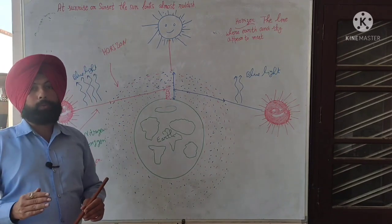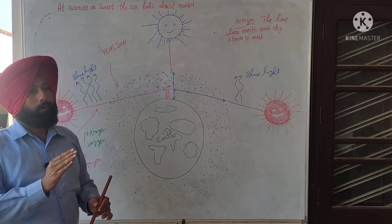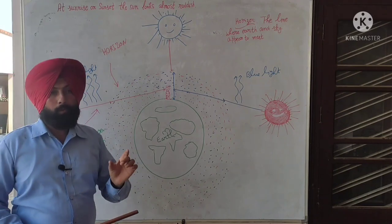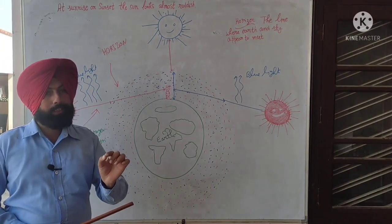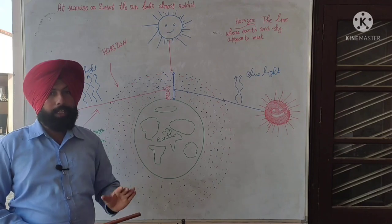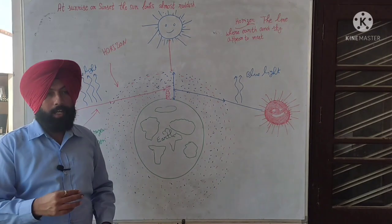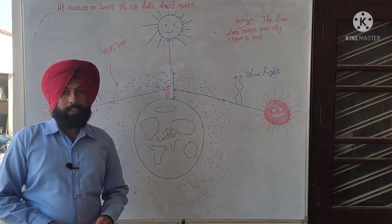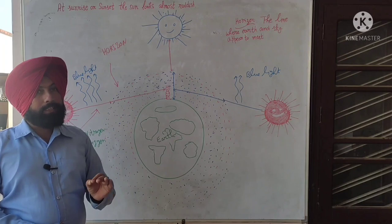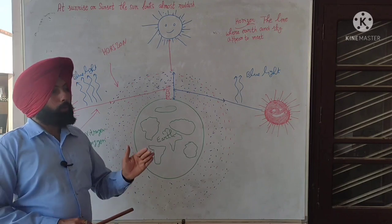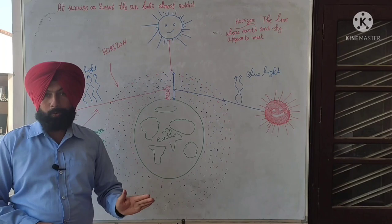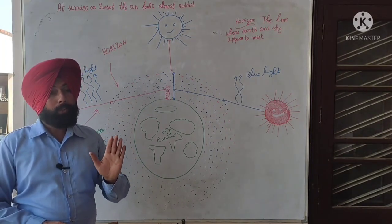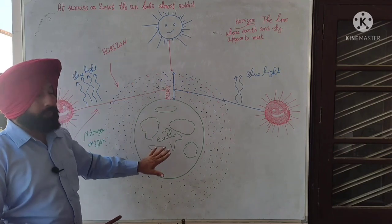This is due to scattering of light. In the previous video, why the sky looks blue in color, I have explained what is scattering of light and Rayleigh's law of scattering. You see also that video.